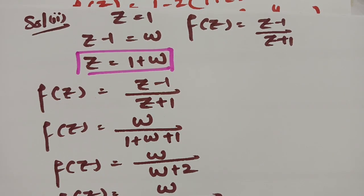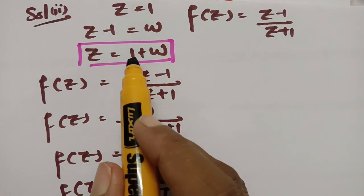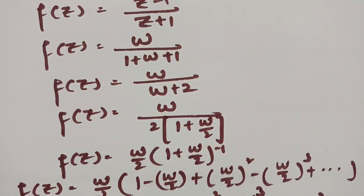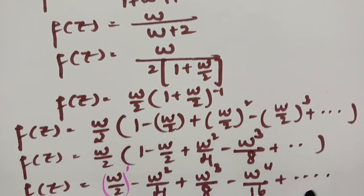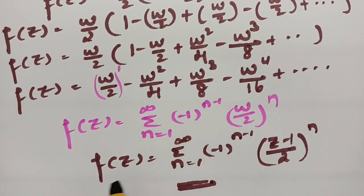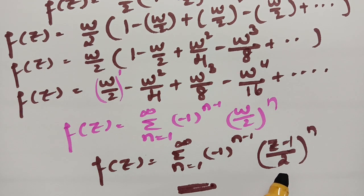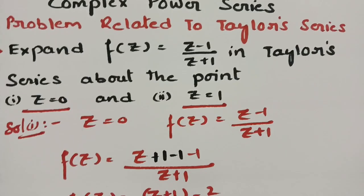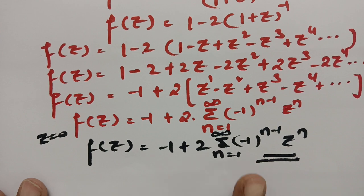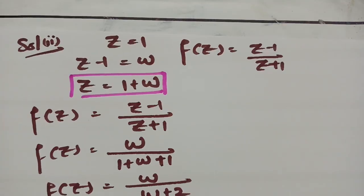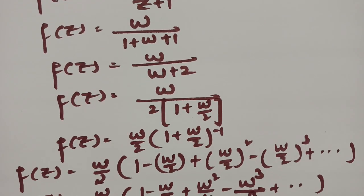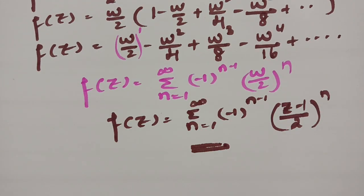For z = 1, we make a substitution z minus 1 = W and z = 1 + W, transform in terms of W, bring to the numerator, and use binomial expansion. After expanding, f(z) = Σ(n=1 to ∞) (-1)^(n-1) · ((z-1)/2)^n. This is the final solution. Thank you so much for watching — there are a few more important problems I am going to upload. Please have a look and pass it on to your friends and practice well.